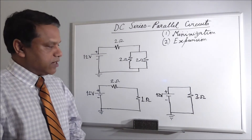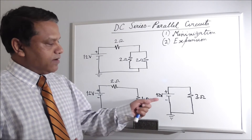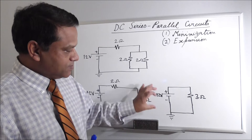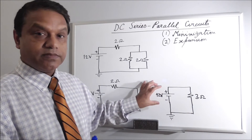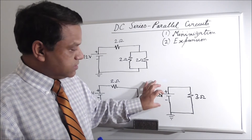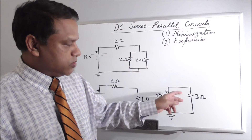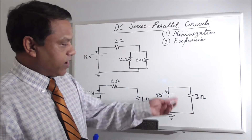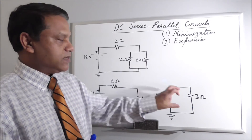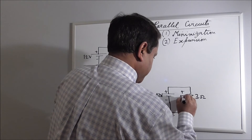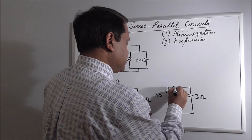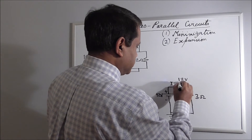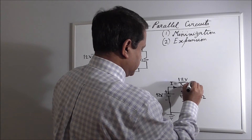Now we apply Ohm's Law to find the source current. We divide 12 volts by 3 ohms — not arbitrarily, but because the full 12 volts is dropped across this single 3-ohm resistor. The source current is 12 divided by 3, which equals 4 amperes.